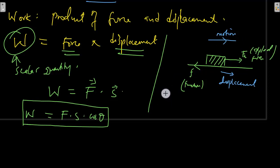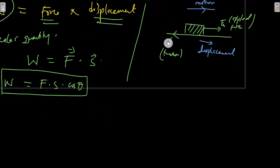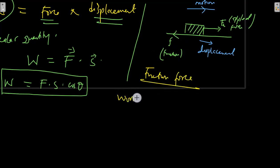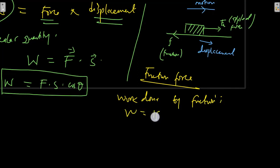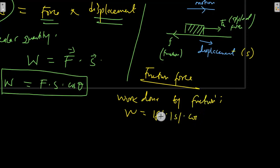Now let's try to see which of these two forces is doing negative work and which one is doing positive work — the applied force and the force of friction. Let's examine the friction force first. The work done by friction is equal to the magnitude of the friction force times the magnitude of displacement times the cosine of the angle between the friction force and the displacement. As you can see, the friction force and the displacement have an angle of 180 degrees, so that's cos 180°.